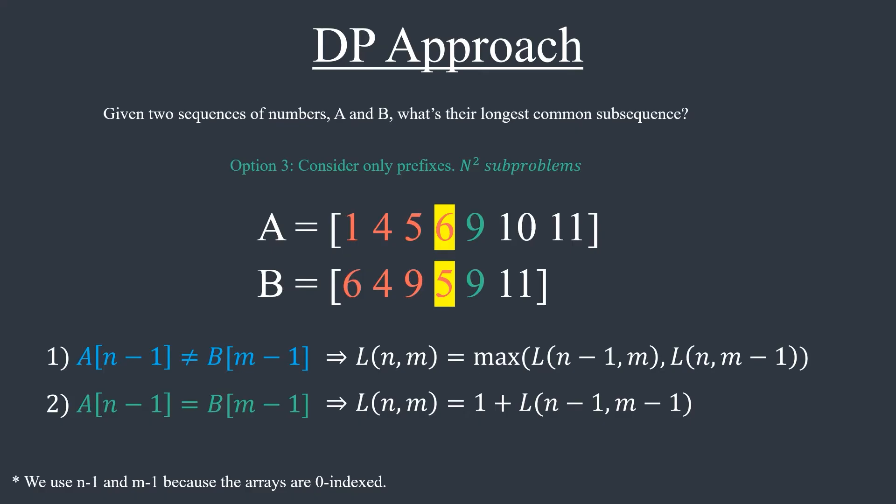Hopefully this convinces you that including both elements is the optimal choice here. If this is still not clear, I highly recommend you pause the video, try to prove this yourself, and then rewatch this part again. Finding the relationship between sub-problems is the hardest part in dynamic programming, so don't worry if this doesn't come to you immediately. It takes time to build intuition, and even then it can be hard to find the right approach. On some days I can solve problems quickly, while some other times I can't solve simple ones.